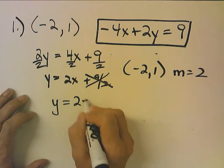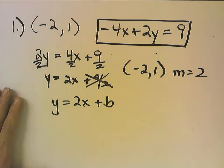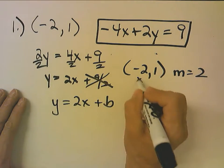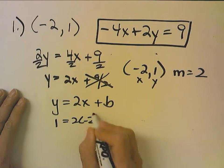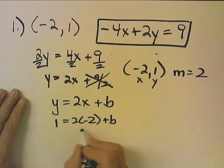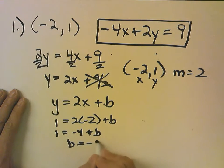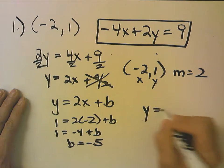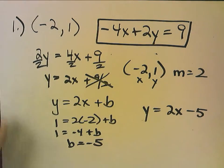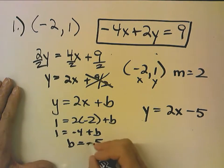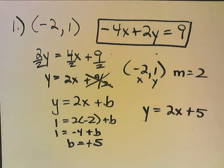So Y equals 2X plus B. I'll plug in 1 for Y and negative 2 for X. 1 equals negative 4 plus B, so B equals 5. The answer is Y equals 2X plus 5.